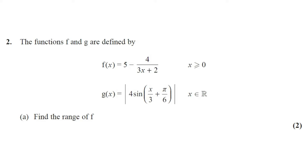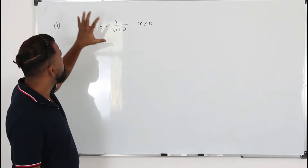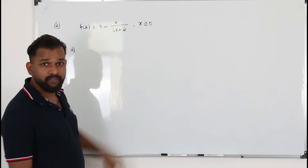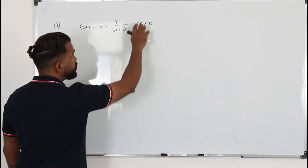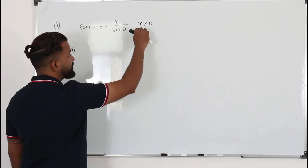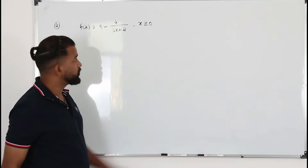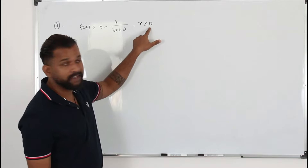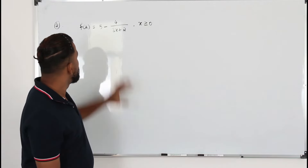This question is worth two marks. In this part we need to find the range of this given function. It's a reciprocal function. You need to pay attention to the condition given — that's the domain of this function. In this case the domain is x is greater than or equal to zero.